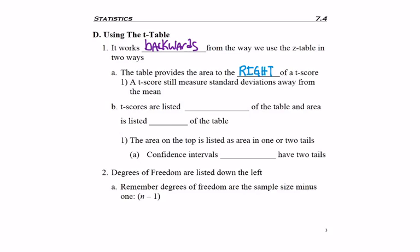Also, the second way that this table is kind of backwards is the actual t-score, the standard deviations away from the mean, this time is listed in the middle of the table. On the z, it was on the two edges.